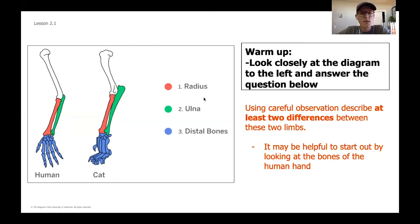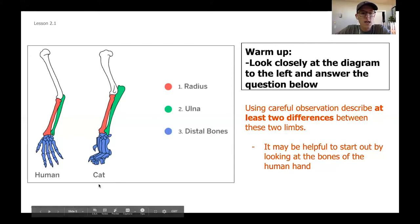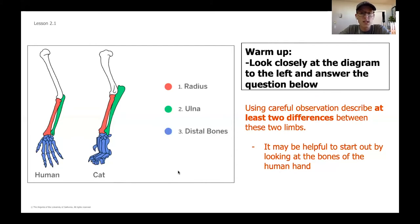Go ahead and take a moment to pause the video. If you haven't grabbed a pencil and a piece of paper, do that now. Using careful observation of the cat and human limbs, what are at least two differences that you notice between these two front limbs? Go ahead and pause right now. Hopefully you got a chance to pause — if not, go back and make sure you've answered this question.